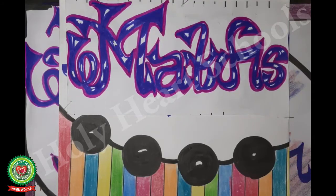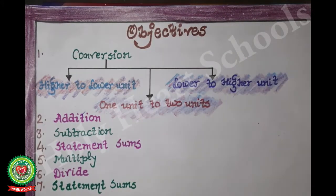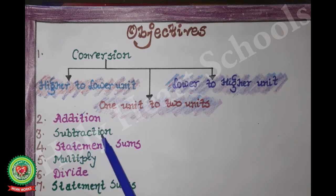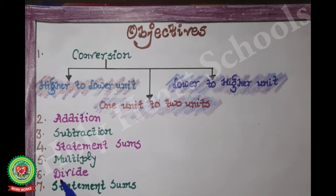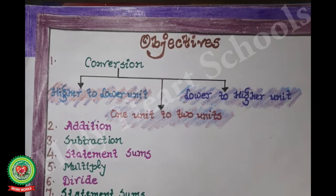Hello students, welcome to the maths class. In the chapter on matrix system, we have already done topics on conversion, addition, subtraction, statement sums of addition and subtraction, multiply and divide. Today I will discuss statement sums of multiply and divide. To understand this topic, let's take some examples.